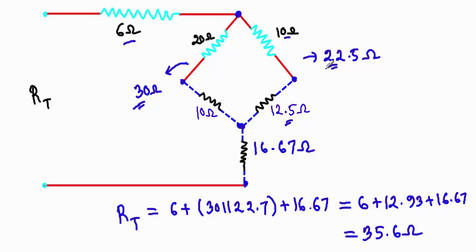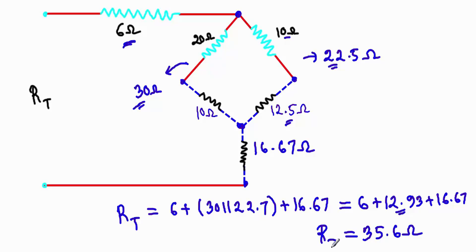The 30 ohm and 22.5 ohm resistances in parallel give an equivalent resistance of 12.93 ohm. This 12.93 ohm is then in series with the 6 ohm and 16.67 ohm resistances. Adding them: 6 + 12.93 + 16.67 = 35.6 ohm. Therefore our total resistance RT is equal to 35.6 ohm.